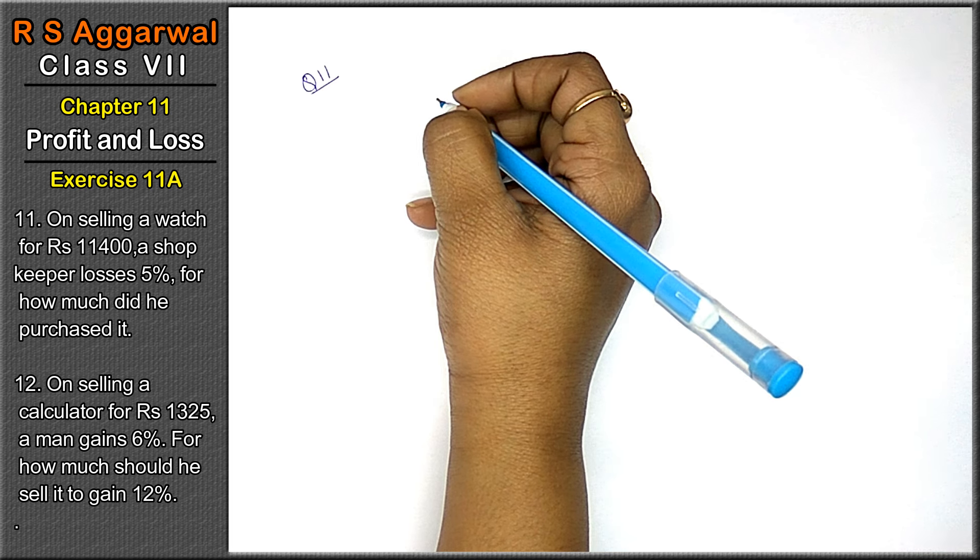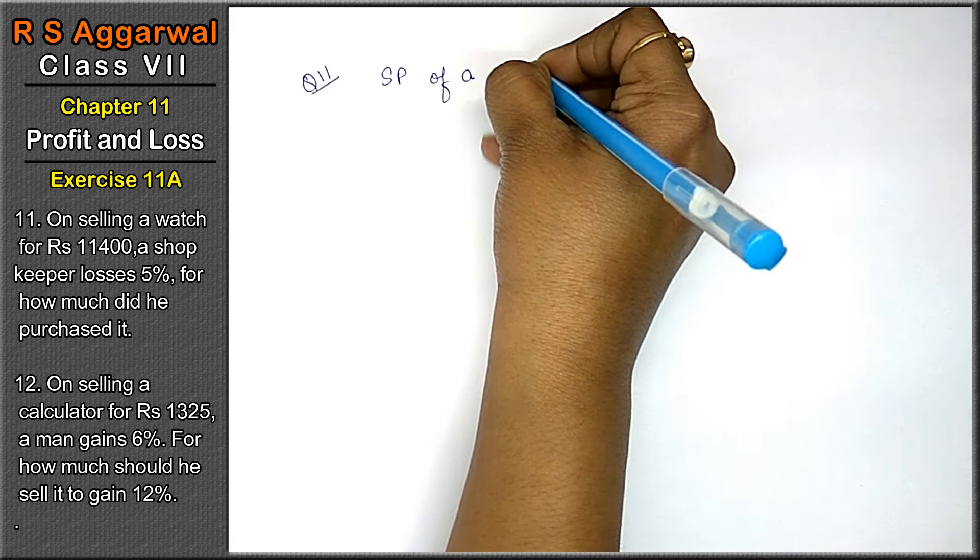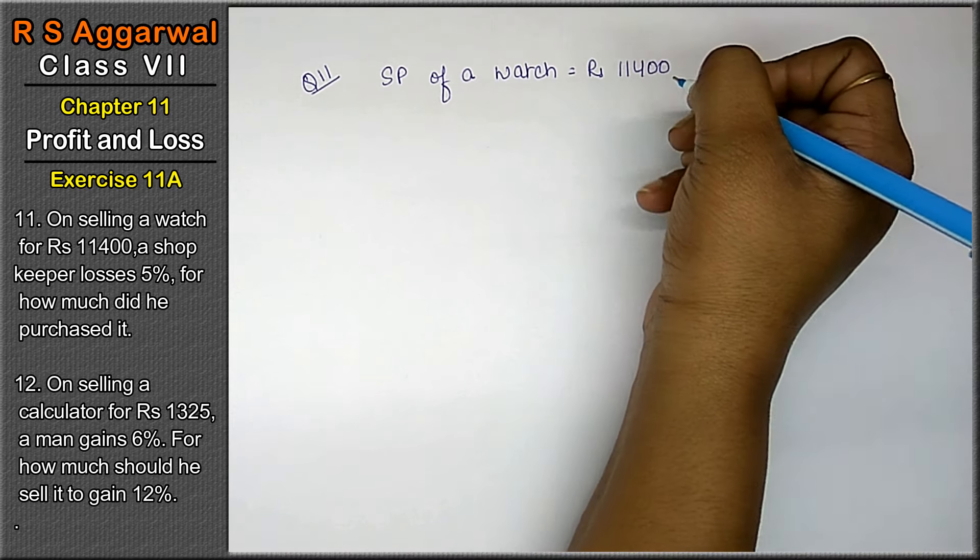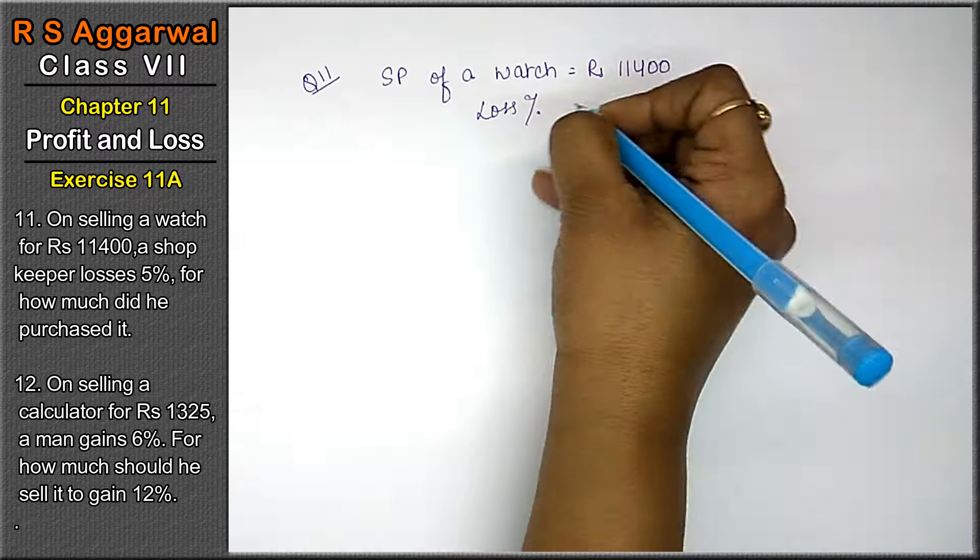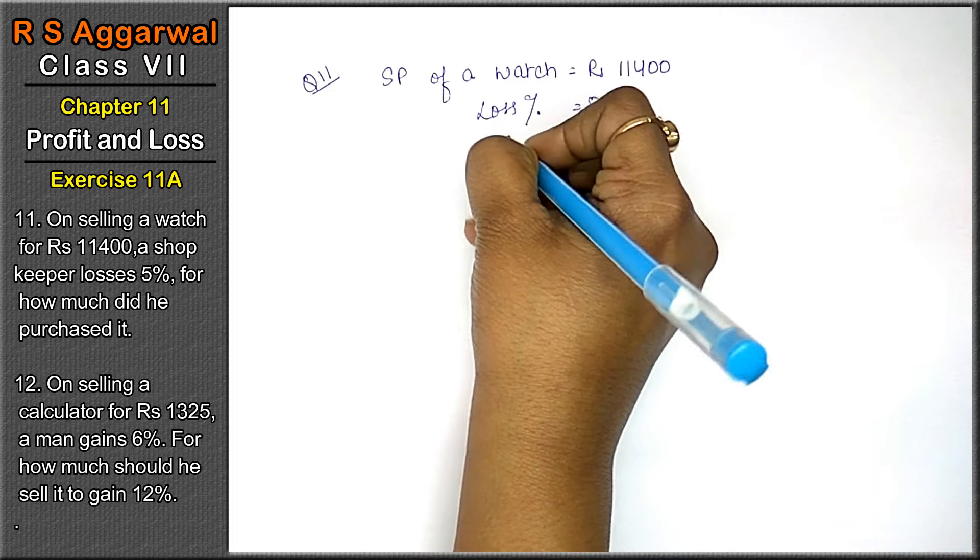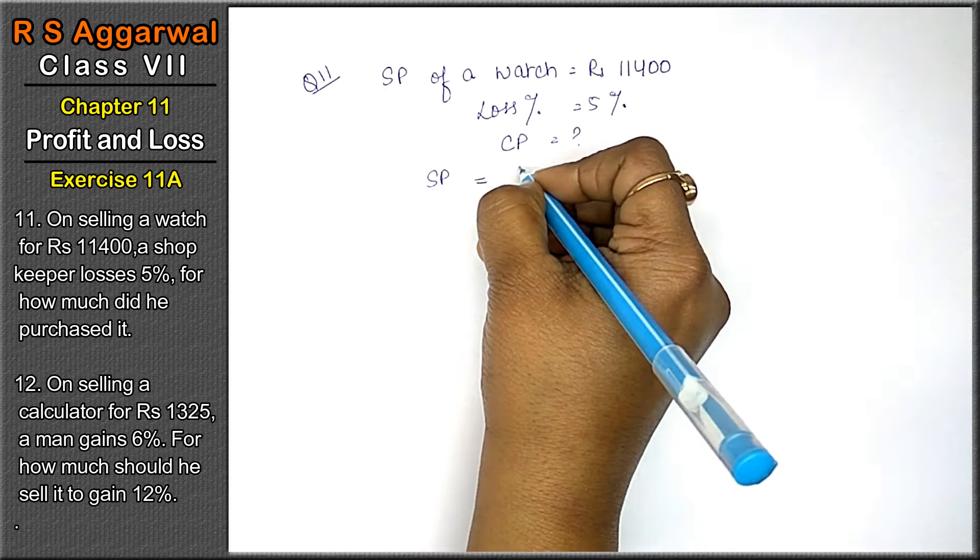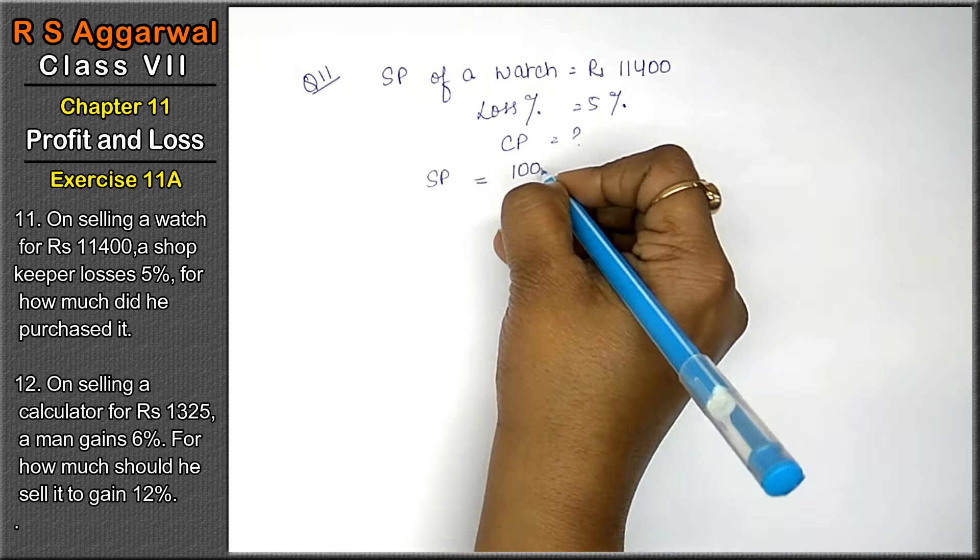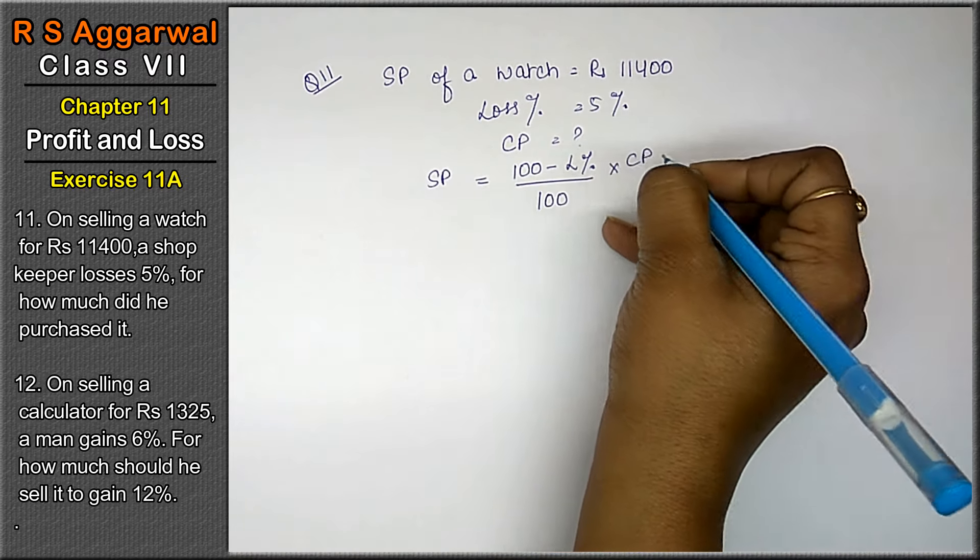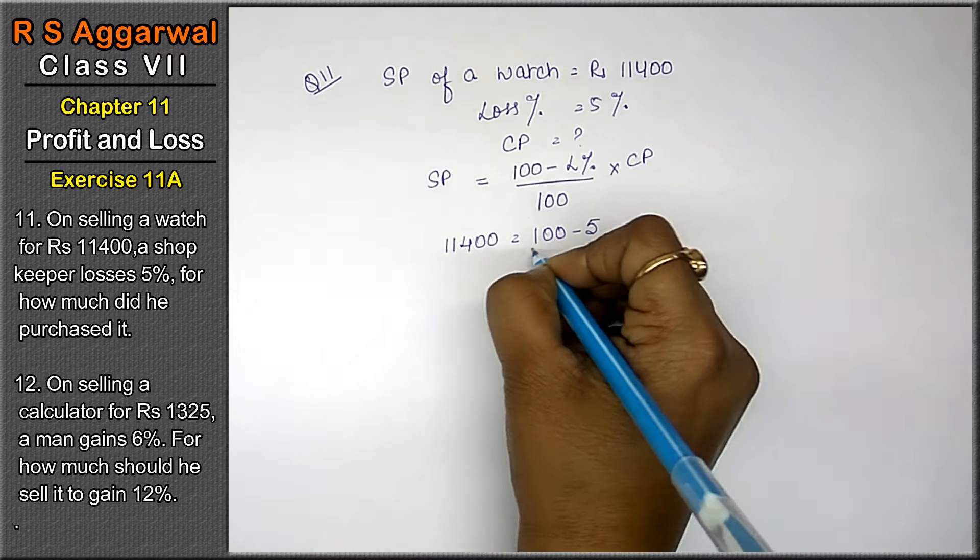Question number 11: The selling price of a watch is rupees 11,400. A shopkeeper loses 5%. How much did he purchase it for? We have to find out the cost price. Friends, same like last video, SP = (100 minus loss percent) upon 100 into CP.